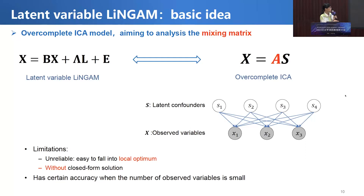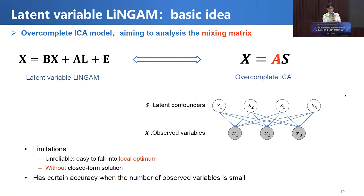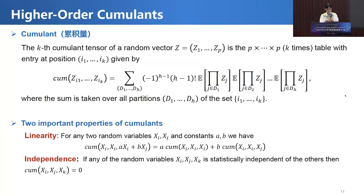The typical method for latent variable LiNGAM is the over-complete ICA model. Researchers translate this model into an over-complete ICA formulation to analyze the mixing matrix. However, the over-complete ICA method is unreliable because it easily falls into local optima and has no closed-form solution, although it has certain accuracy when the number of observed variables is small.